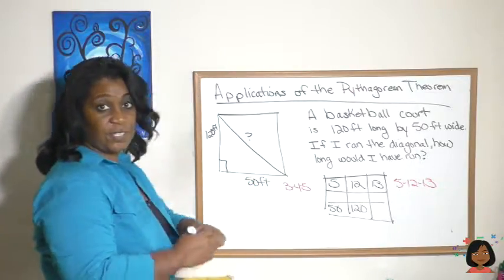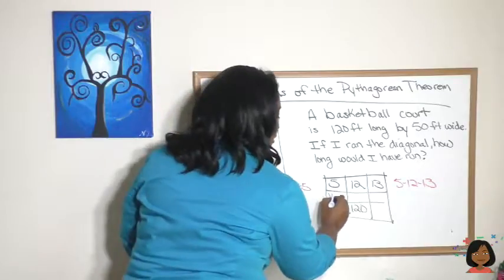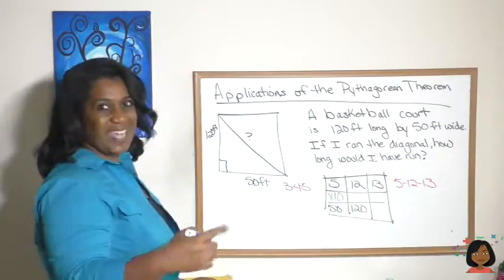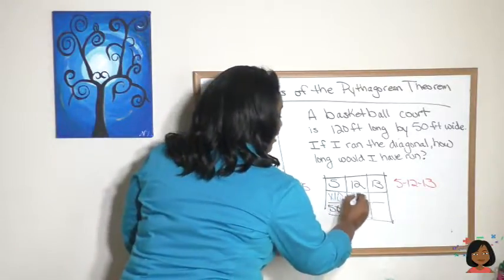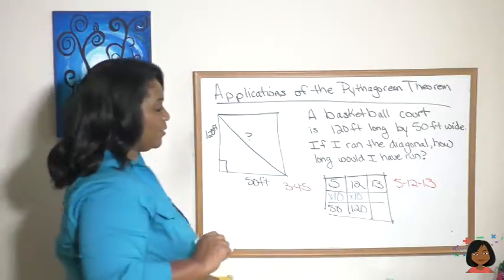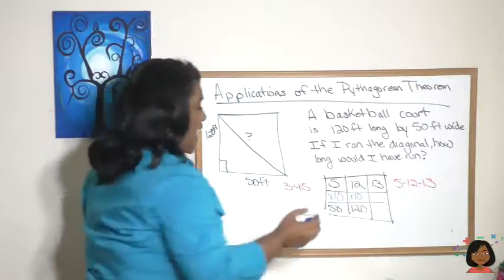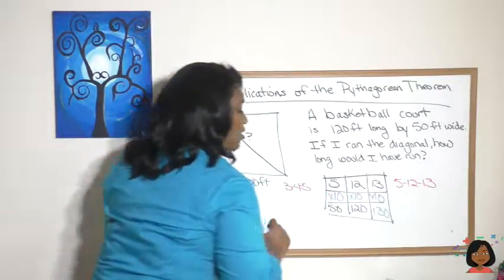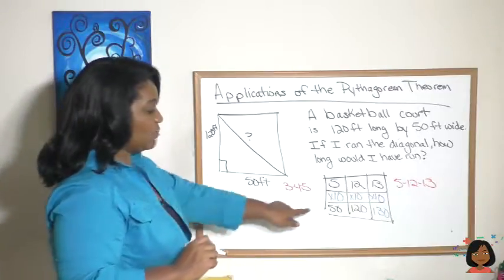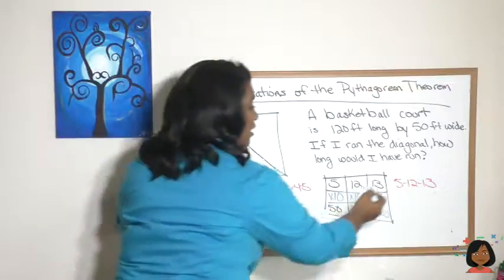5 times what is 50? 5 times 10 is 50. Okay, what if we multiply 10 in the next box? 12 times 10? Yep, that's 120. So it looks like this might be following a pattern. 13 times 10, we're going to multiply it by that same multiple, and we're going to get 130. So look, it seems to fit the 5-12-13 triplet.